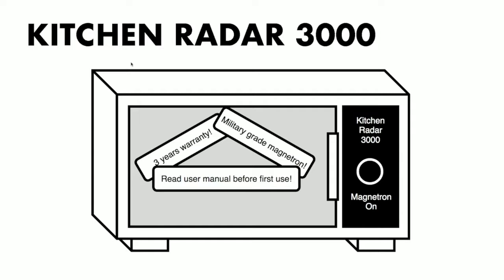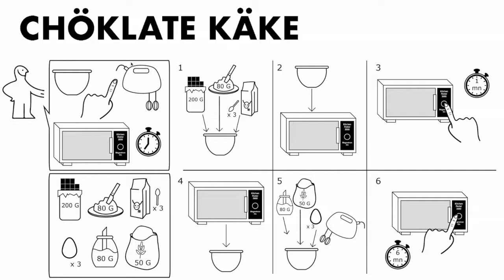Let me introduce the KitchenWater 3000, bringing top-of-the-art military-grade water components into your kitchen. The KitchenWater 3000 will help you become the fastest cook in the universe. Let's see how to cook a chocolate cake in a few minutes: put 200 grams of dark chocolate, 80 grams of butter, 3 tablespoons of milk in a glass container. Put the container in the KitchenWater, push and hold the magnetron-on button for one minute. Take it out, add 3 eggs, 80 grams of sugar, 50 grams of flour, mix well. Put it back in the KitchenWater, push and hold the magnetron-on button for another 6 minutes, and you've baked a delicious chocolate cake in less than 8 minutes.